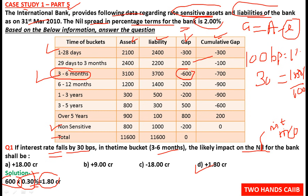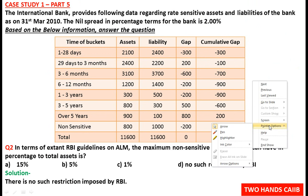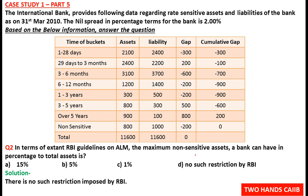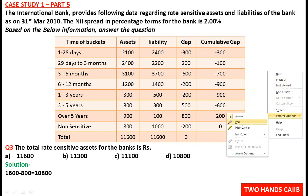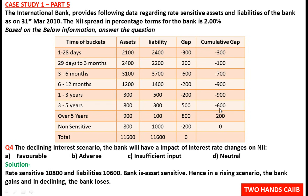The answer is plus 1.80 crore — a positive sign because it is a gain for the bank. Regarding RBI guidelines on ALM, there are no restrictions on the maximum rate sensitive assets percentage. The total rate sensitive assets of the bank are calculated as total assets minus non-sensitive assets: 11,600 minus 800 equals 10,800 crore. There is a printing mistake in the question, but 10,800 is the correct answer.